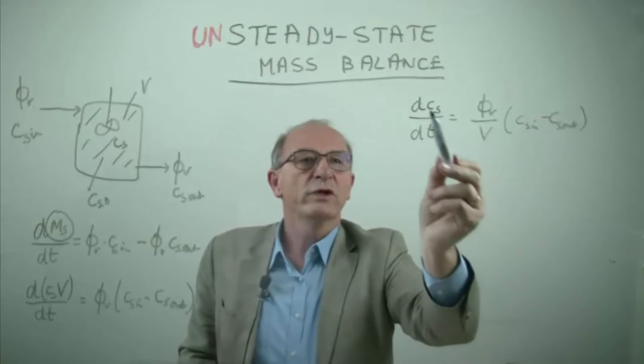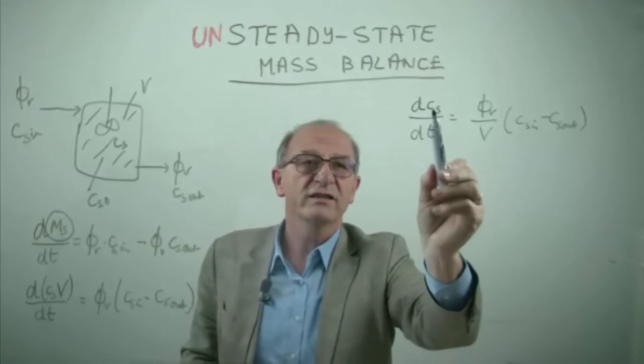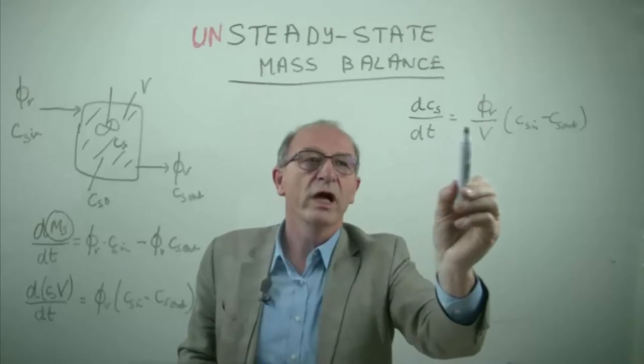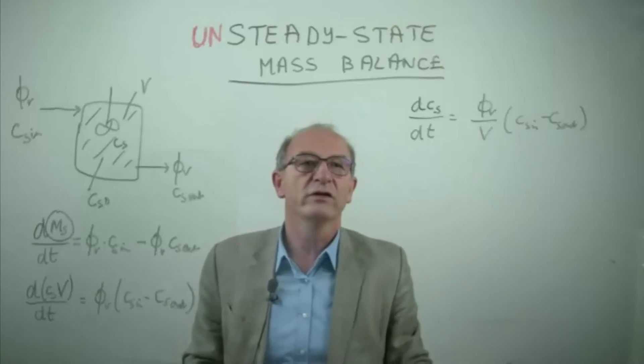Why is it allowed to get the V outside this term and C_s not? C_s is dependent on the time and the volume is constant. So constants may be taken outside and we divide the whole equation.